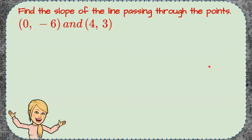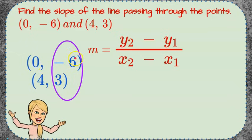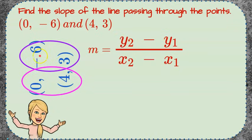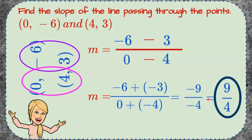Your turn — go ahead and find the slope between these two points, then come back. Welcome back. Using the slope formula, we stack the ordered pairs, identify y and x coordinates, and set up our ratio. We get negative six minus three over zero minus four, which becomes negative six plus negative three over zero plus negative four: negative nine over negative four. A negative divided by a negative gives a positive result — nine over four. So our slope is 9/4, positive, meaning the line is rising left to right.